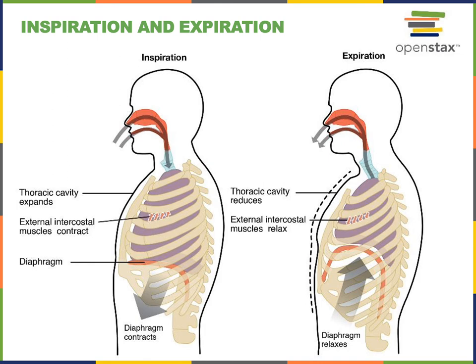It is possible to produce more forceful expirations by contracting accessory muscles such as the abdominal muscles — the rectus abdominis, abdominal obliques, and transverse abdominis. These muscles compress the abdominal cavity, which helps decrease the volume of the thoracic cavity and produce more forceful expiration.